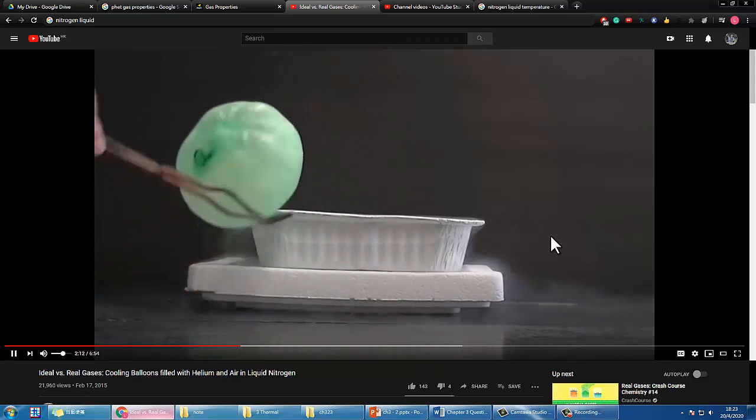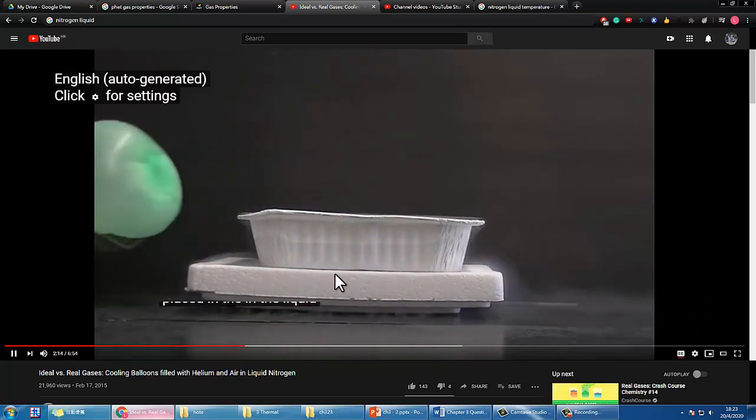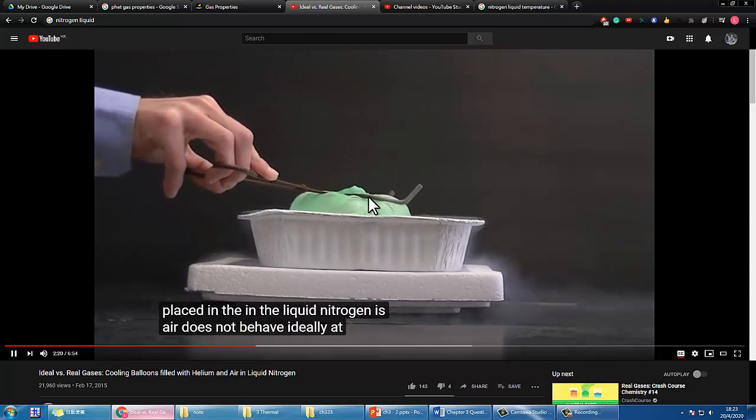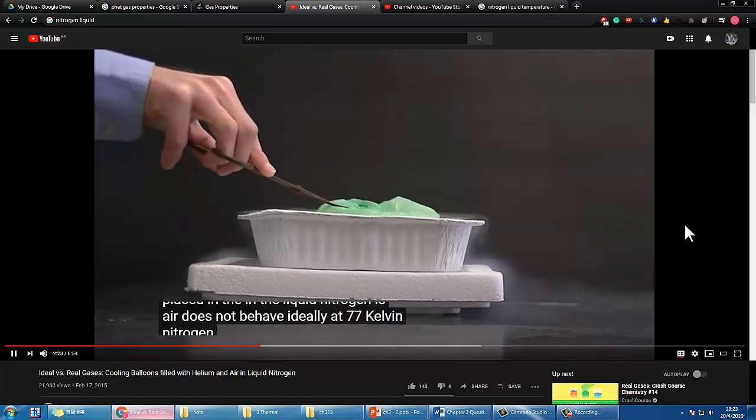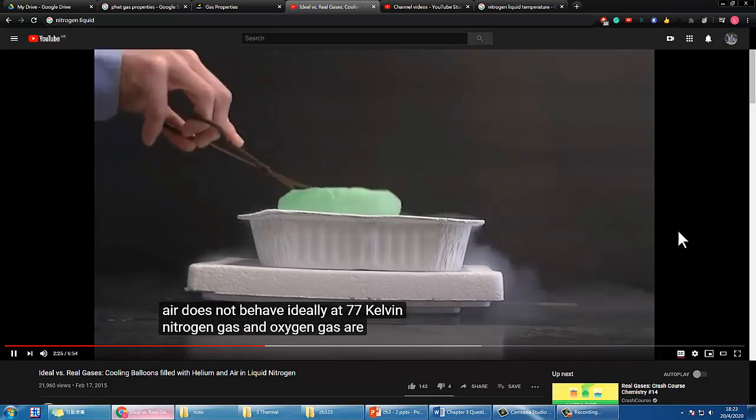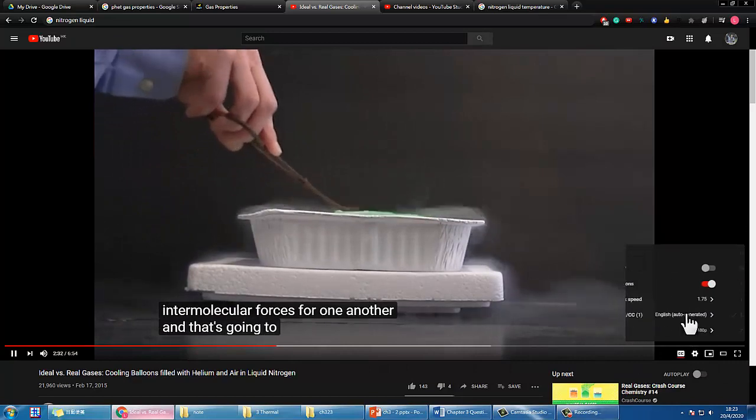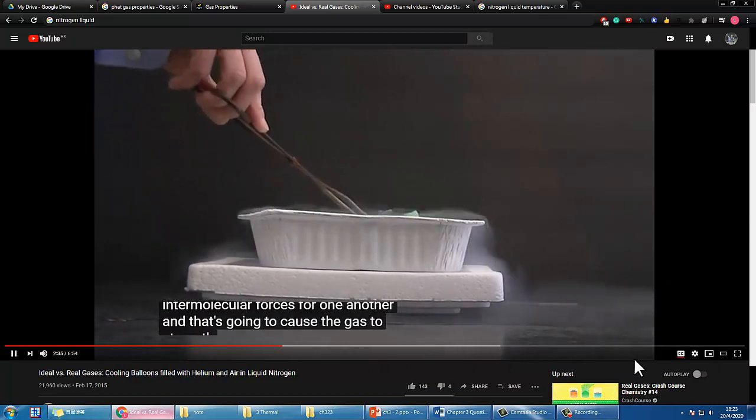So what's going on when this balloon is placed in the liquid nitrogen. You can kind of feel it's a bit crispy and of course if you put it again it will shrink back to 77 Kelvin. The nitrogen gas and oxygen gas are going to start to display a large amount of intermolecular forces and that's going to cause the gas to shrink to a much smaller volume than it would if those gases behaved ideally.